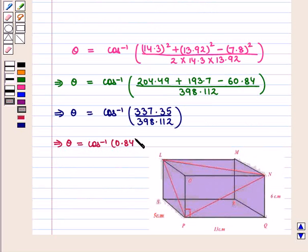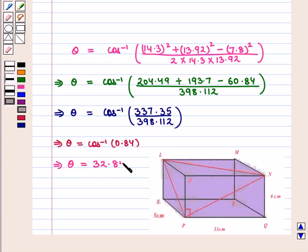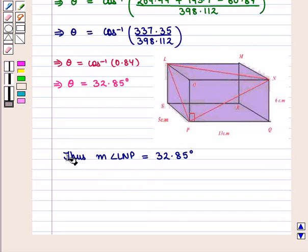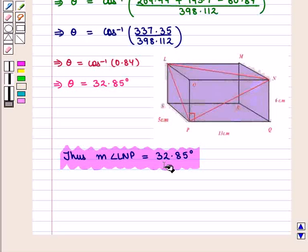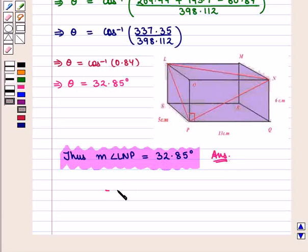Using a calculator, we find the value of cos⁻¹(0.84) and we get θ = 32.85 degrees. Thus, the measure of angle LNP is equal to 32.85 degrees, which is the required answer. This completes our session. Hope you enjoyed this session.